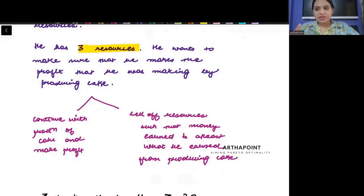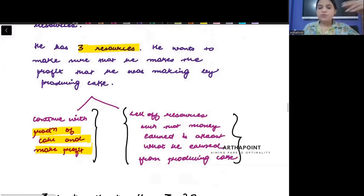Now you can make two things. He can continue the production of cake and make profit. Second, he will stop the production of cake, sell all his resources, and get some money. But he wants to make sure that he gets at least as much money by selling. At least he earns that much that he earned here.